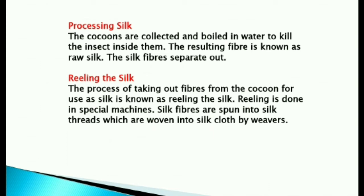Processing silk: The cocoons are collected and boiled in water to kill the insect inside them. The resulting fiber is known as raw silk, and the silk fibers separate out. The process of taking out fibers from the cocoon for use as silk is known as reeling the silk. Reeling is done in special machines. Silk fibers are spun into silk threads, which are woven into silk cloth by weavers.